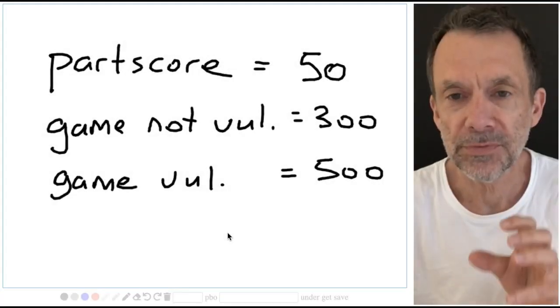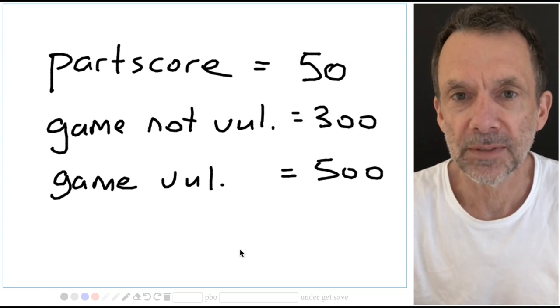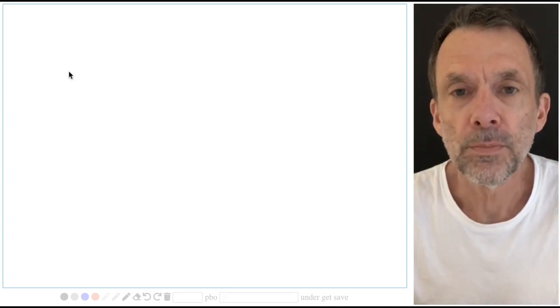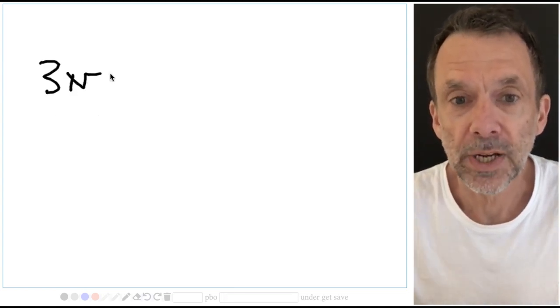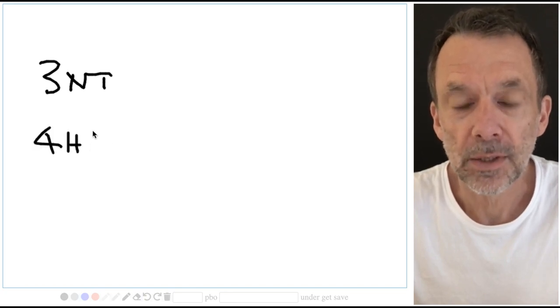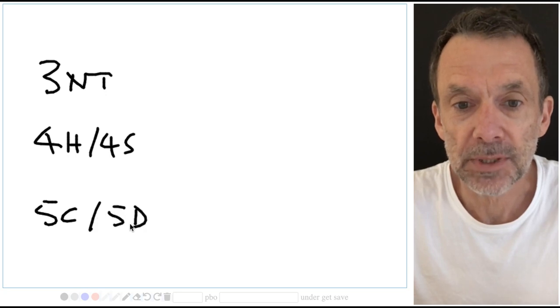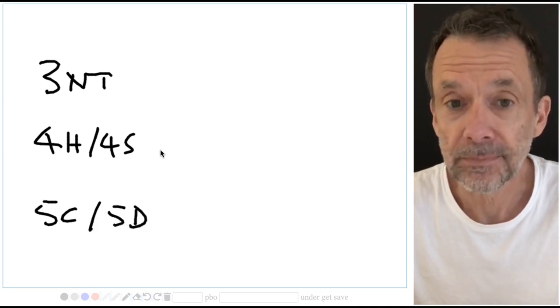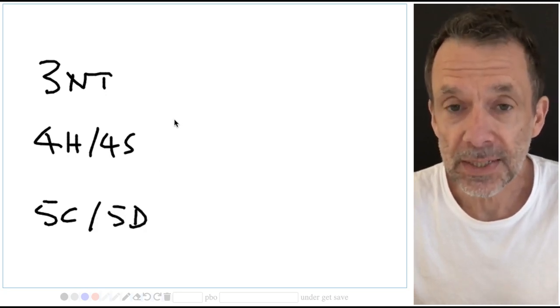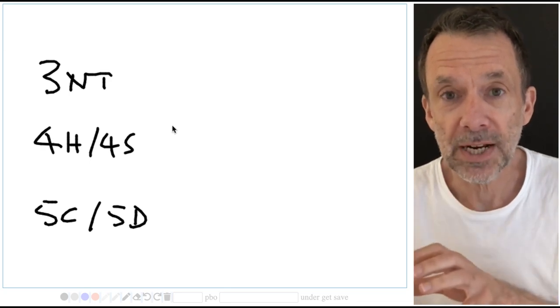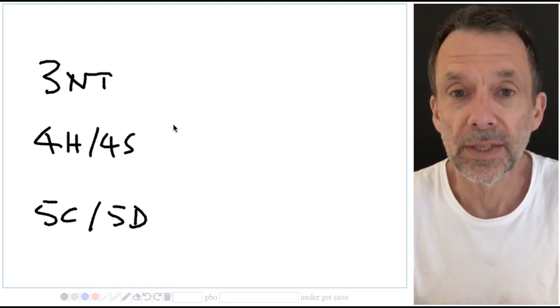Okay take a rest for a second, I'm going to show you something. You may already know that contracts of three no trumps, four hearts, four spades, five clubs and five diamonds are game. And I've just said that if your trick points add up to 100 or more you get the game bonus.